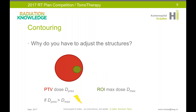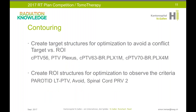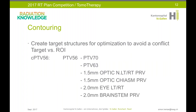In this case, the OAR structure is inside the target. So if the maximum allowed dose for the OAR is less than the prescribed dose for your target, you have to adjust your structures. To reach the goals in this example, you have to create a second target structure — shown here in orange — with a reduced dose. For the plan competition, I created target structures for optimization to avoid conflicts, and I created help structures to observe the criteria.